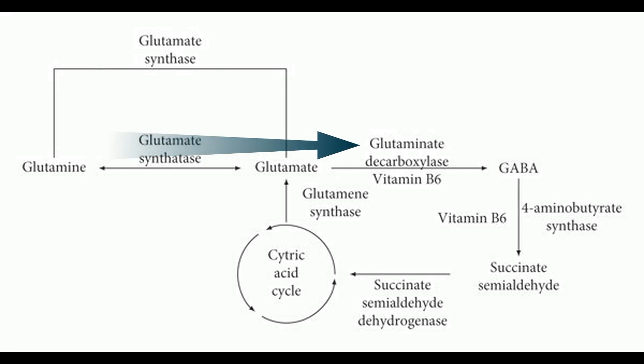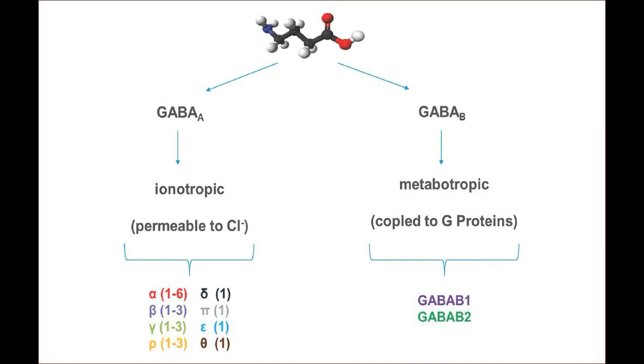GABA is synthesized from glutamate by the enzyme glutamate decarboxylase, or GAD. Once released into the synapse, GABA binds to its receptors which are classified into two main types, GABA-A and GABA-B. GABA-A receptors are ionotropic and mediate fast inhibitory synaptic transmission, while GABA-B receptors are metabotropic and modulate slower synaptic responses.